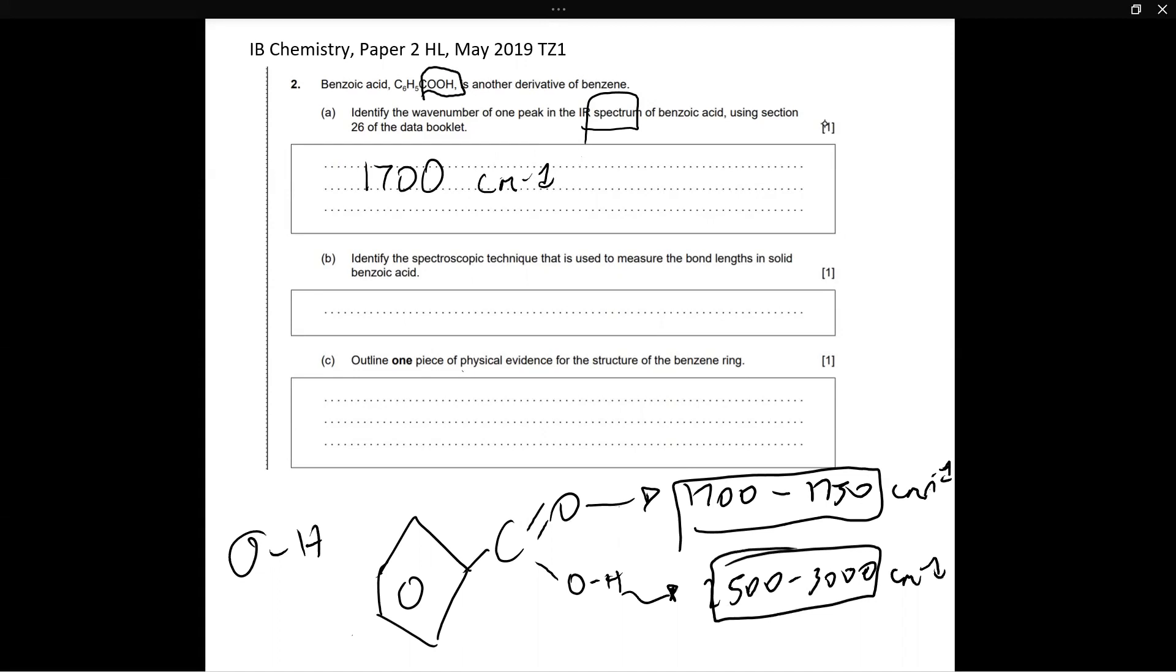Now, next part. Identify the spectroscopic technique that is used to measure the bond lengths in solid benzoic acid. Now, how do you measure bond lengths? You only have to know the name of the technique, it's called X-ray crystallography. That's all you have to know, you don't have to know any details, you just need to know that it is used to measure bond lengths.